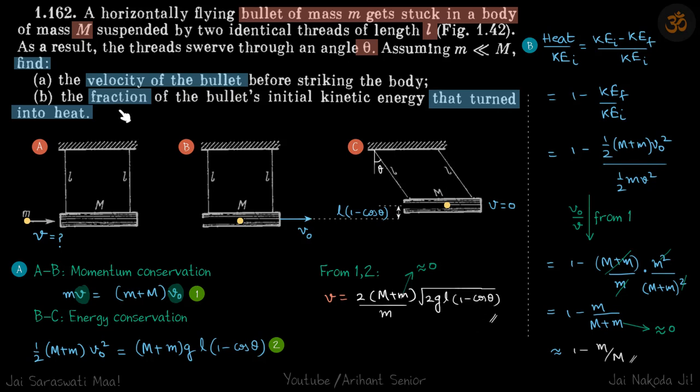Now, what is the fraction of the bullet's initial kinetic energy that turned into heat? The only energy lost is because of heat from here to here. Let's find the change in energy, and that will be the energy turned into heat.